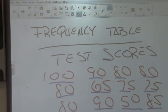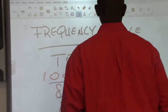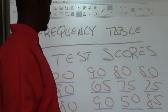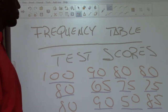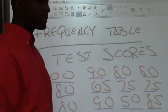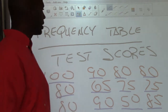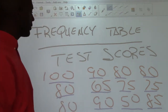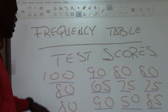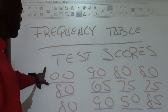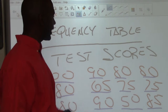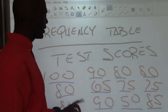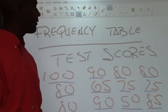This lesson is on frequency tables. We're going to use the test scores from a previous lesson to create a frequency table and analyze data. The test scores we'll use are: 100, 90, 80, 80, 80, 65, 75, 75, 80, 90, 50, and 85.